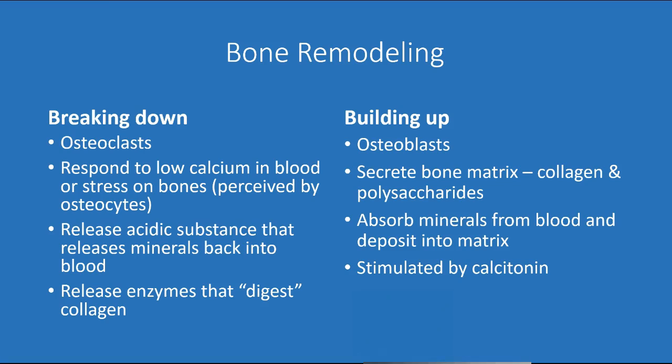Calcium is also critical for signaling via neurons and so forth, so we need to maintain a very specific range of calcium. When calcium in the blood starts to get low, we can tap into the reservoir in the bones and release some of that matrix so those calcium ions can enter the blood and maintain calcium levels. So if we sense that calcium levels are slipping too low, or if there's stress on the bones and the body wants to rebuild those stressed areas, the first thing we need to do is stimulate osteoclasts to come in and break down the bone.